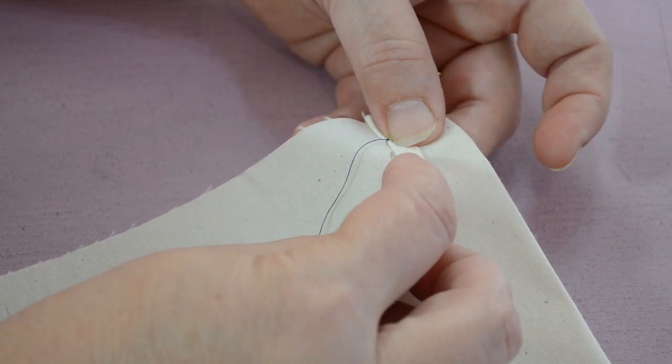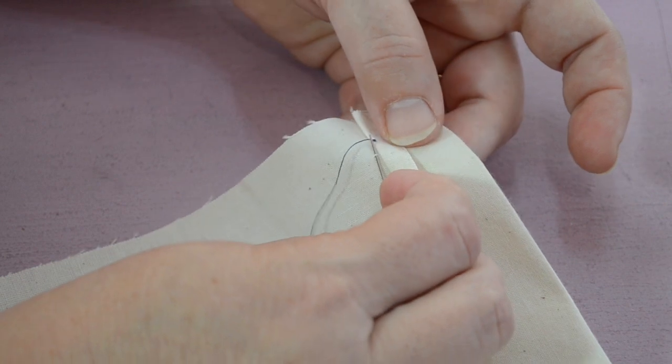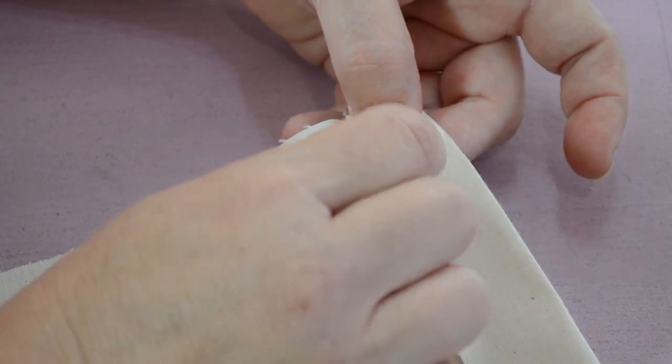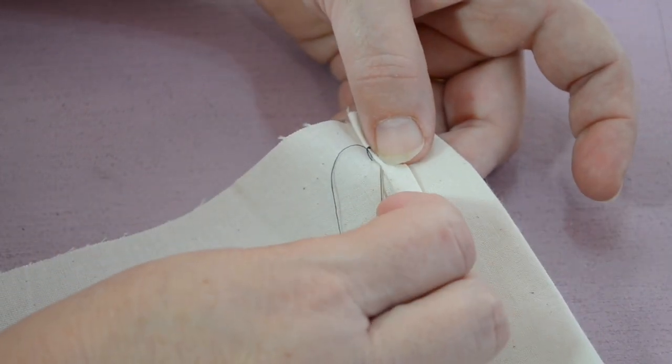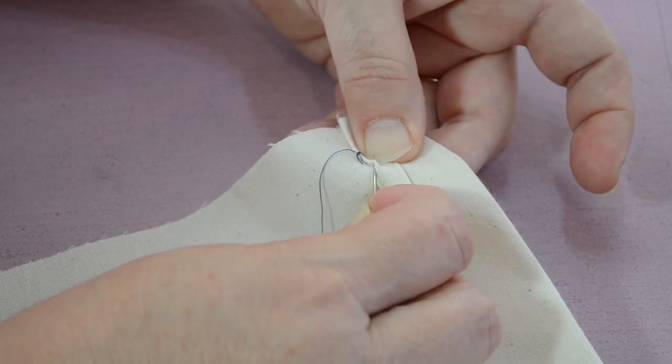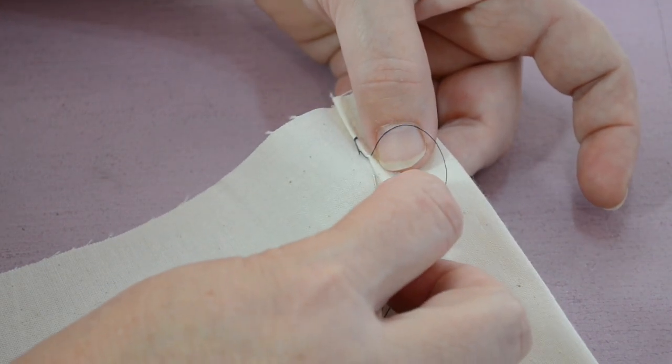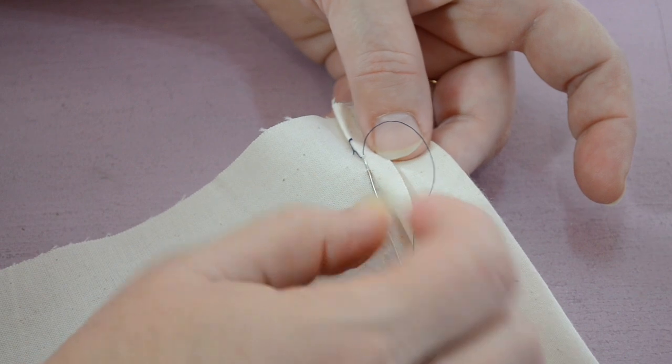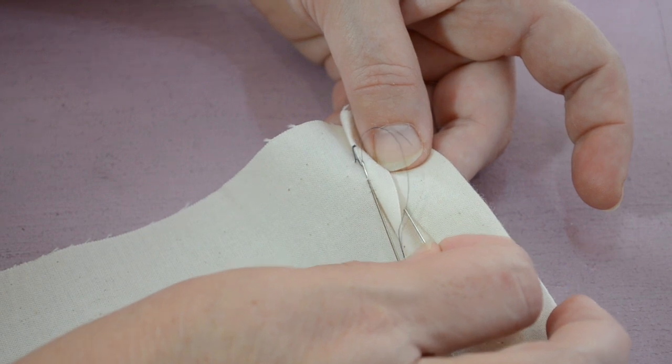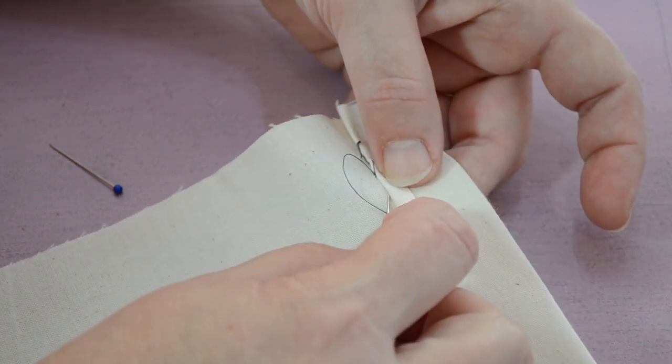Your second stitch is going to come into your main fabric and you're just going to pick up a tiny little bit of thread there from the main fabric. Now this invisible hem is called a herringbone stitch so it creates like a little herringbone. My second stitch is going to come into the hem fold, and my third into the main fabric. Again, just a little tiny thread. I'm going to take that pin out. It's just in my way. Don't work with pins in your way. Take them out as you go.